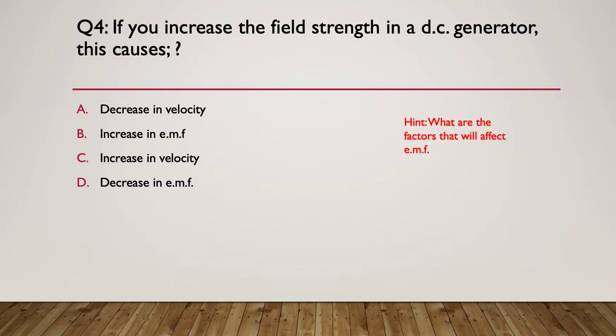Here's the hint: what are the factors that affect an EMF? Think about all the things that will affect EMF and whether they are proportional or inversely proportional. The answer: if you increase the field strength in a DC generator, this will cause the EMF to go up — it's what a generator is all about, how it works. Increase the field strength, the EMF goes up.